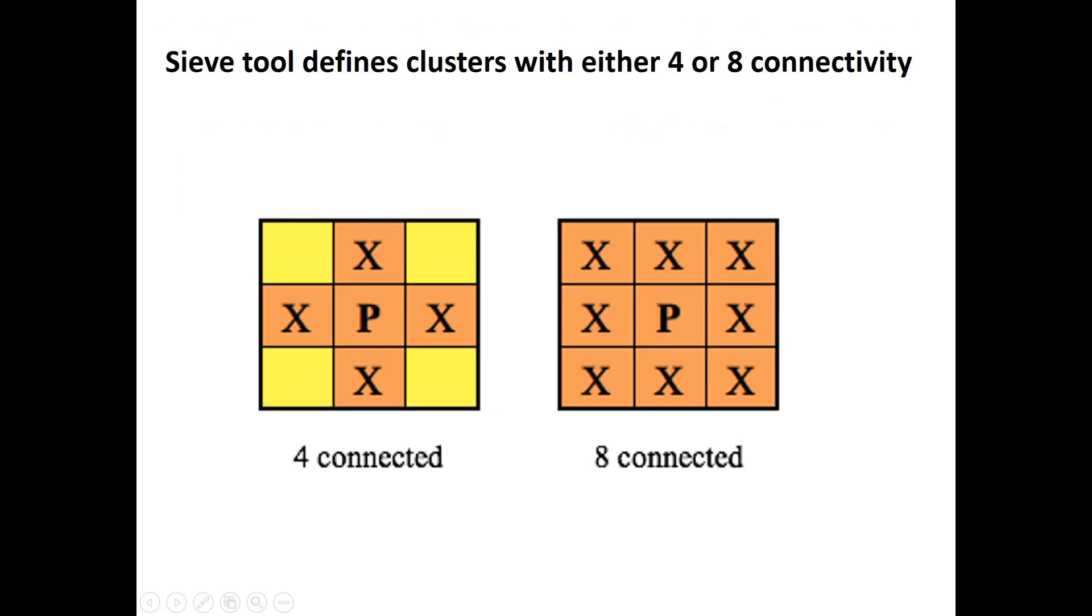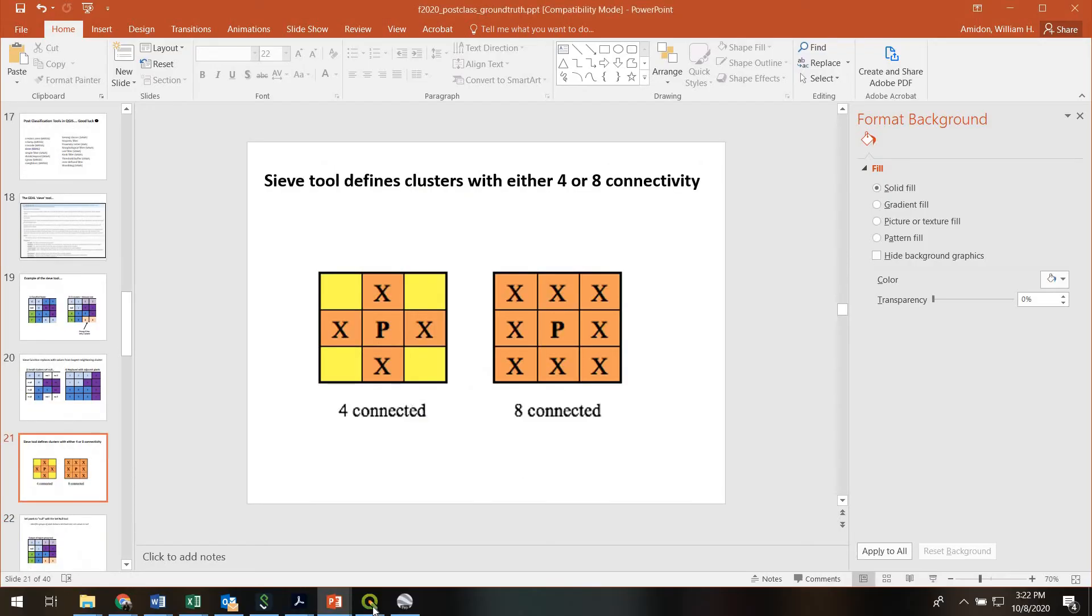One other important idea is that as the sieve tool is trying to figure out how big a cluster of pixels is there's two ways you can have it count. You can have it count clusters in terms of only the immediately adjacent or the four connected pixels, or you can have it count clusters in terms of the eight connected where it would look at whether it's the same value in all eight of the surrounding pixels or just in all four.